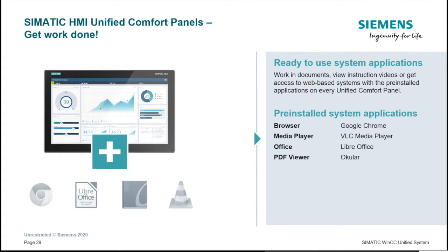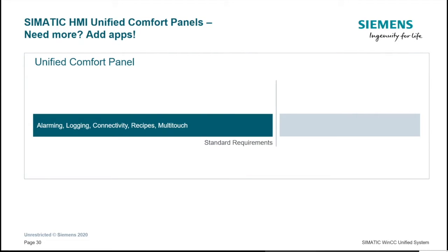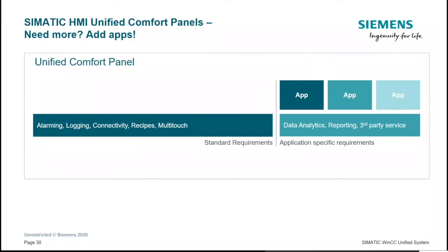Standard tools pre-installed on the systems include a web browser, a media player, office applications, and a PDF viewer — all accessible in the control panel during runtime. With unified comfort panels, all standard capabilities such as alarming, logging, recipes, and multi-touch are standard equipment. If you want more capabilities such as data analytics and reporting, you can add your own custom applications to the panels — there's no need for a separate PC platform, as everything is provided on one single device.